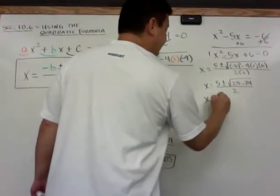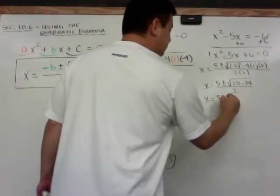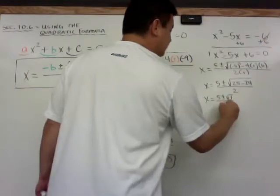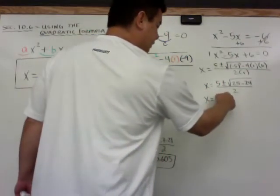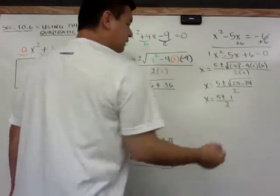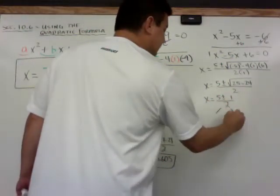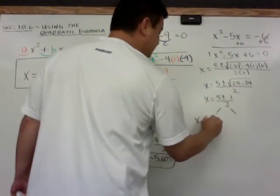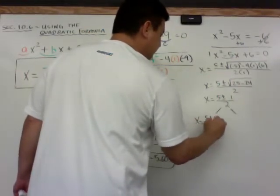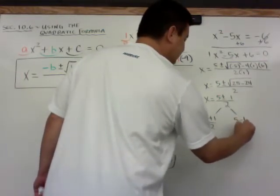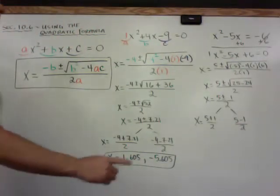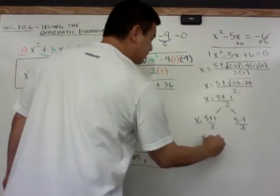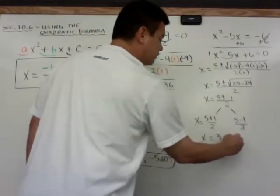So x is equal to 5 plus or minus the square root of 1 all over 2. And we know that the square root of 1 is 1. So I'm just going to erase the square root sign. And now this is where I split it for the plus or minus. So x is equal to 5 plus 1 over 2, and 5 minus 1 over 2. So this 6 over 2 becomes 3, and this 4 over 2 becomes 2.